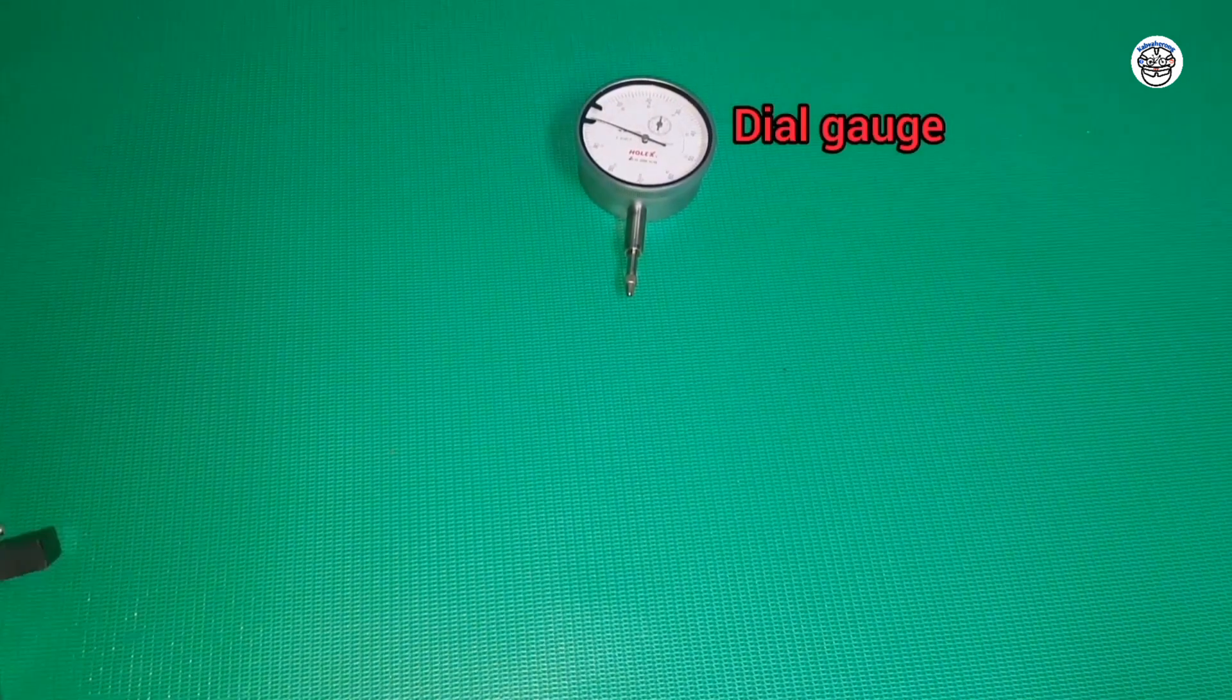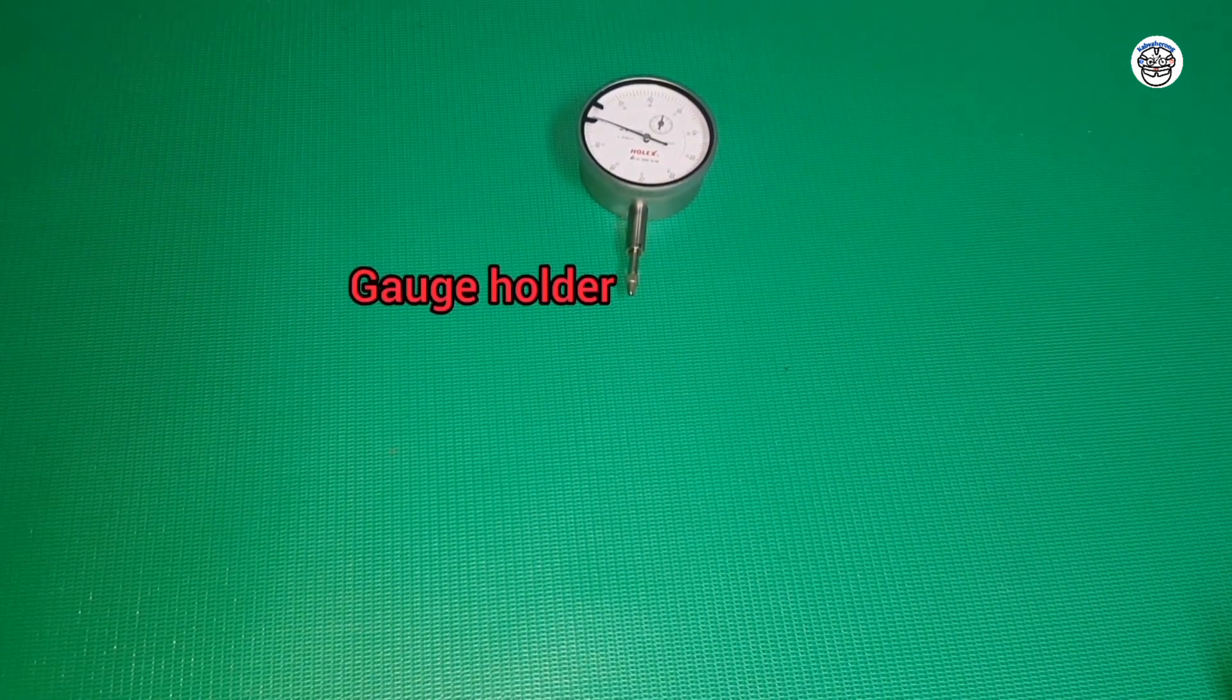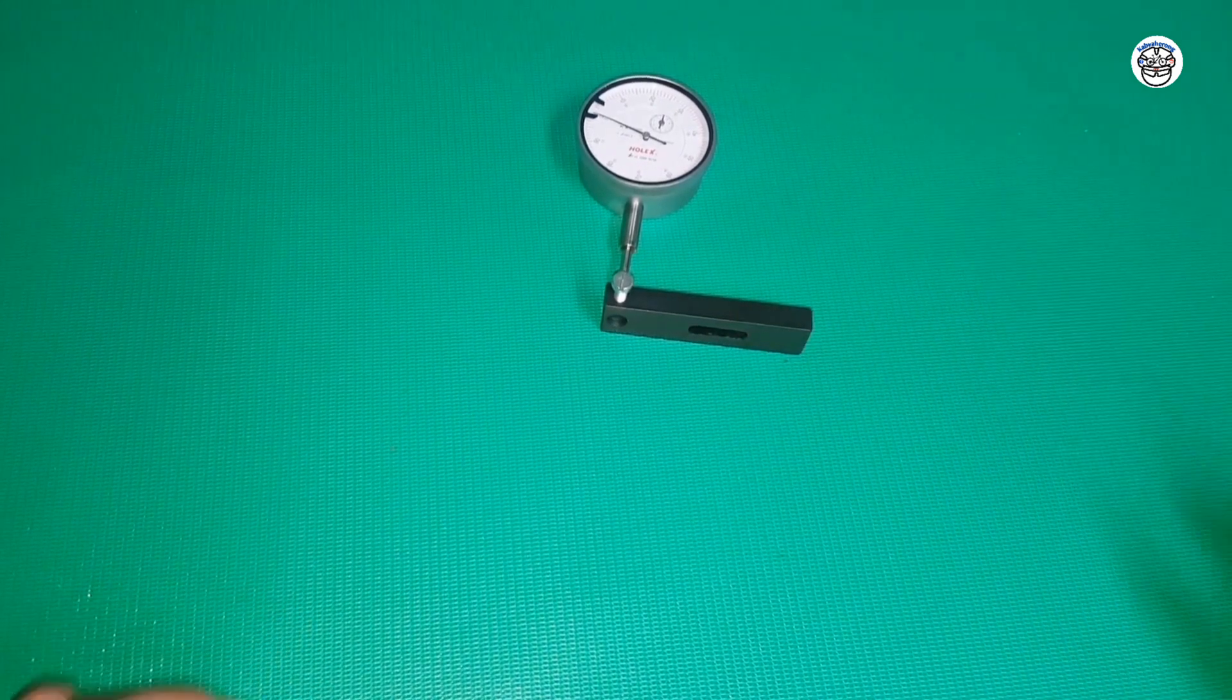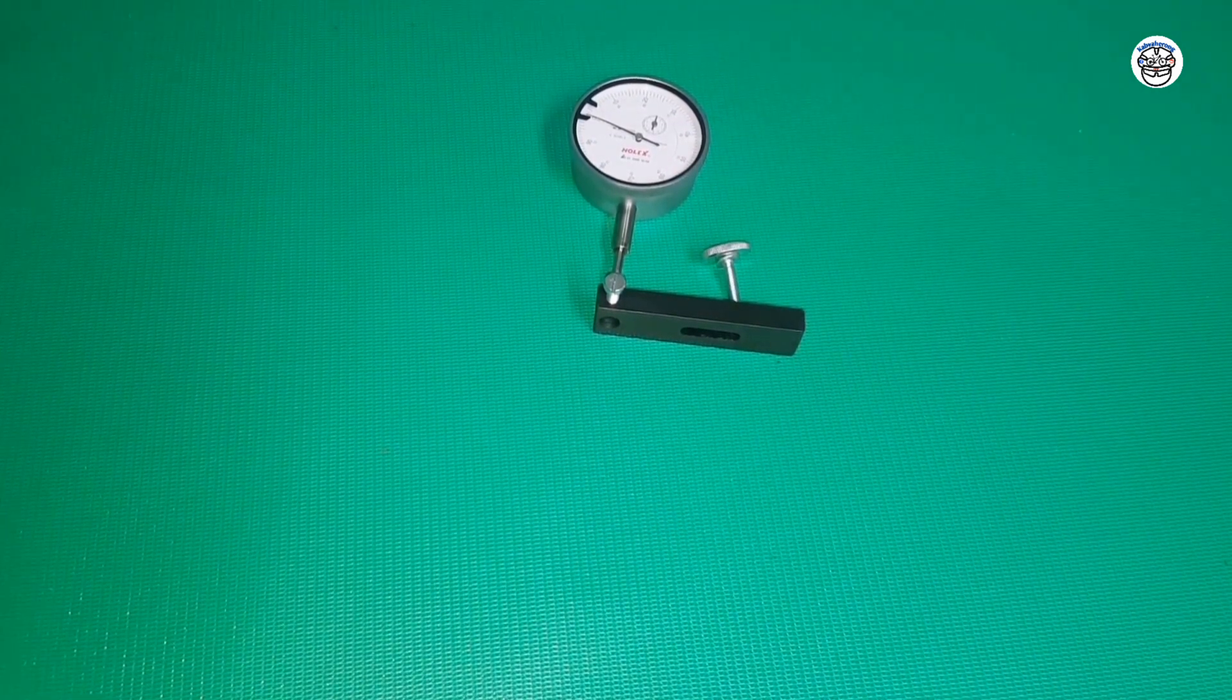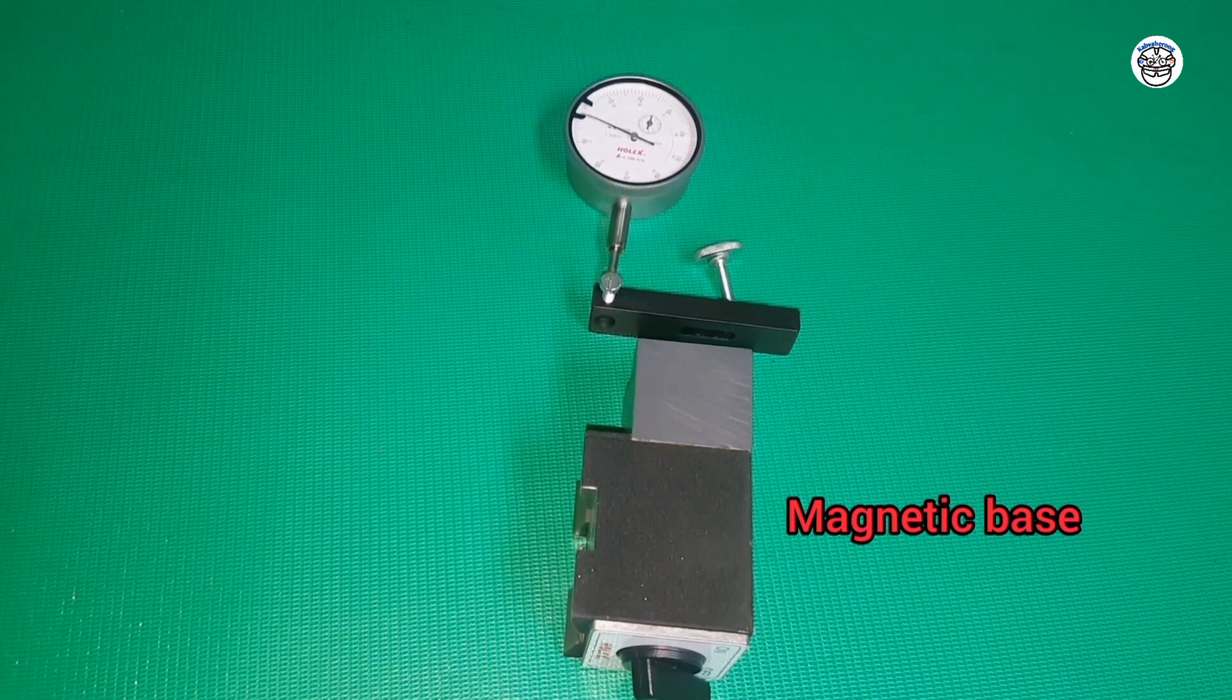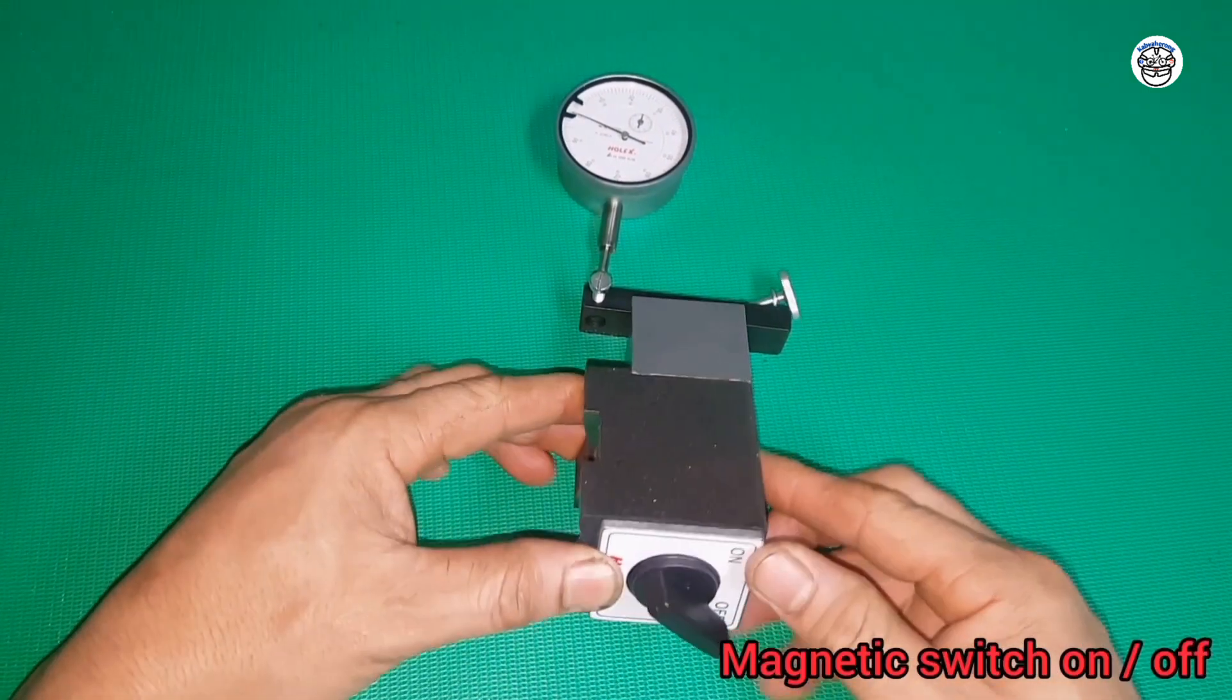Dial gauge indicator, gauge holder, securing bolt, magnetic base, magnetic switch on or off.